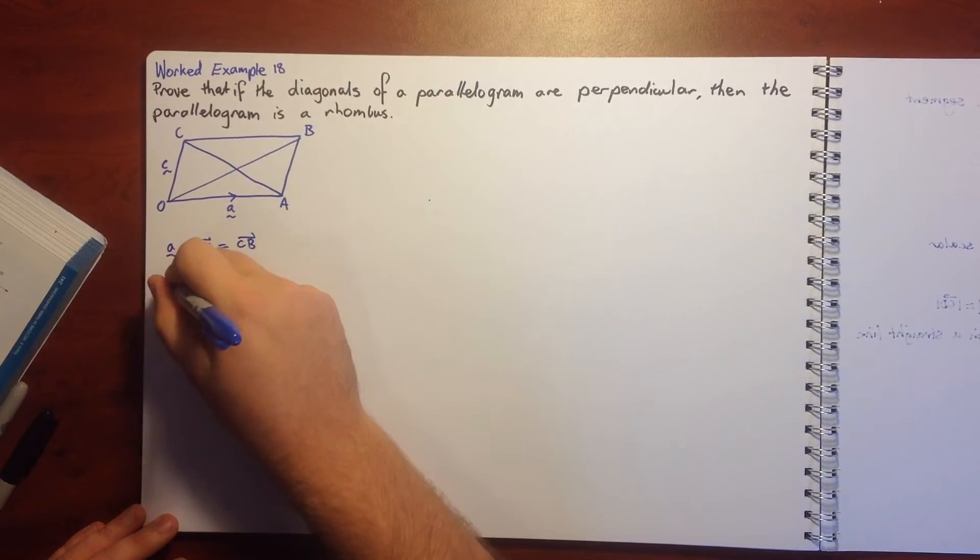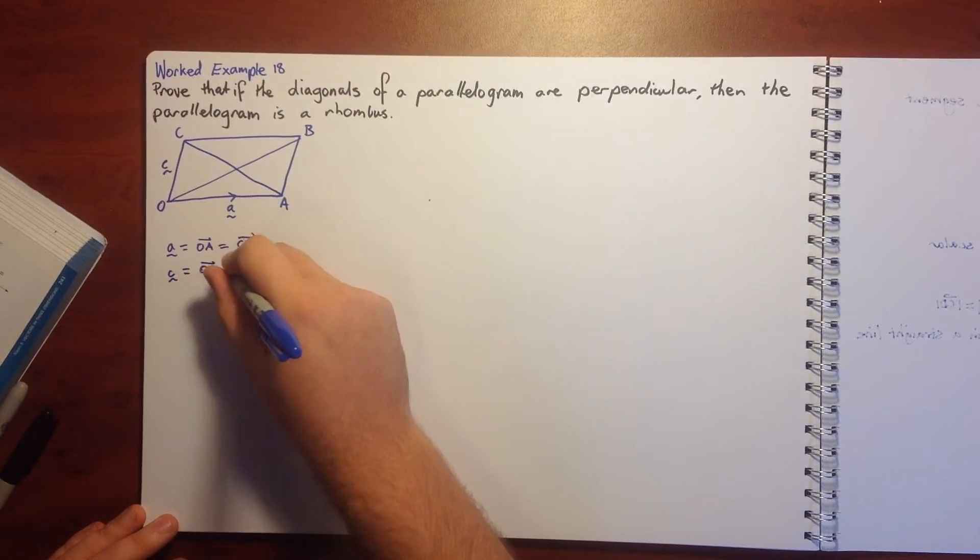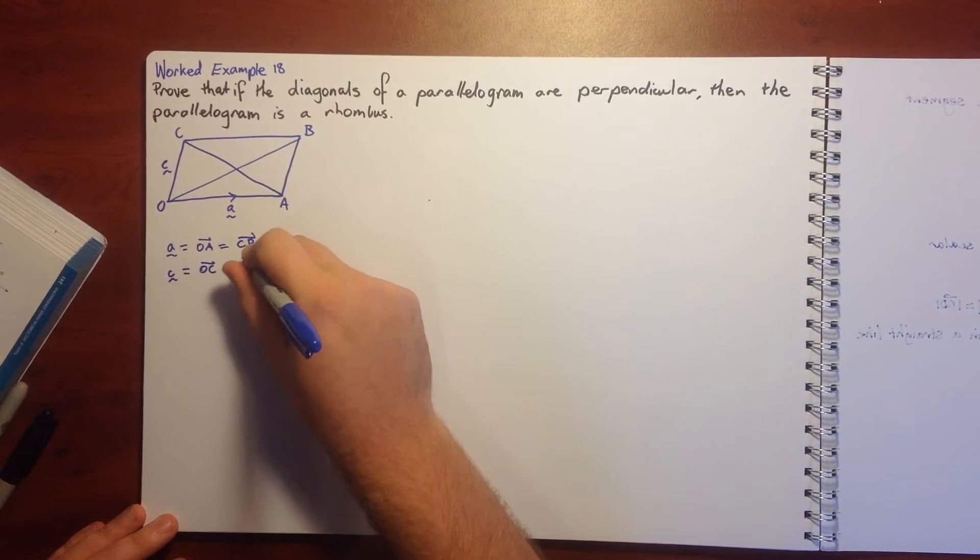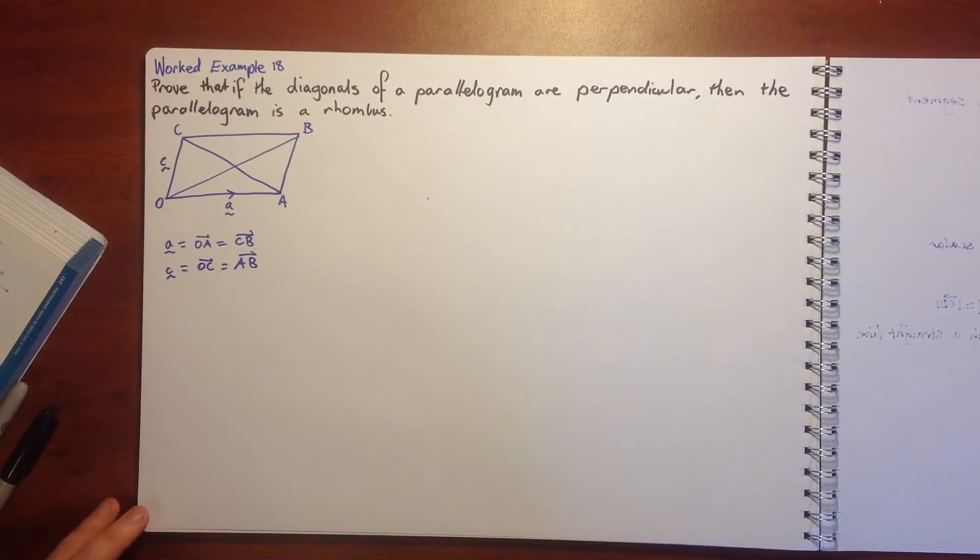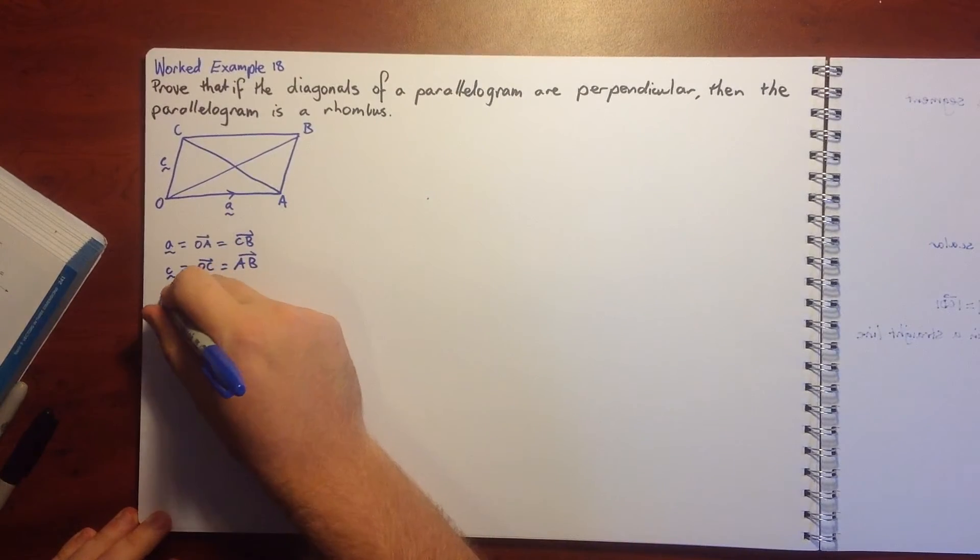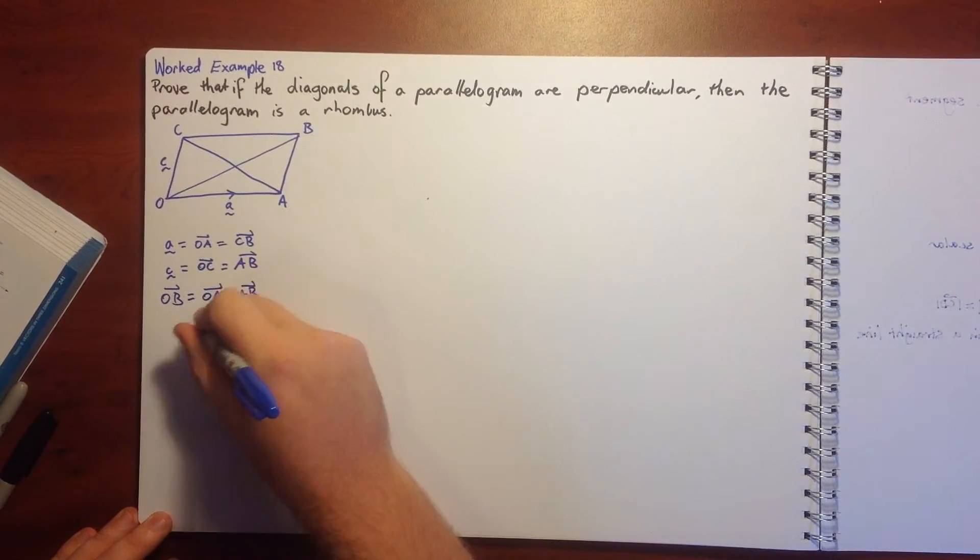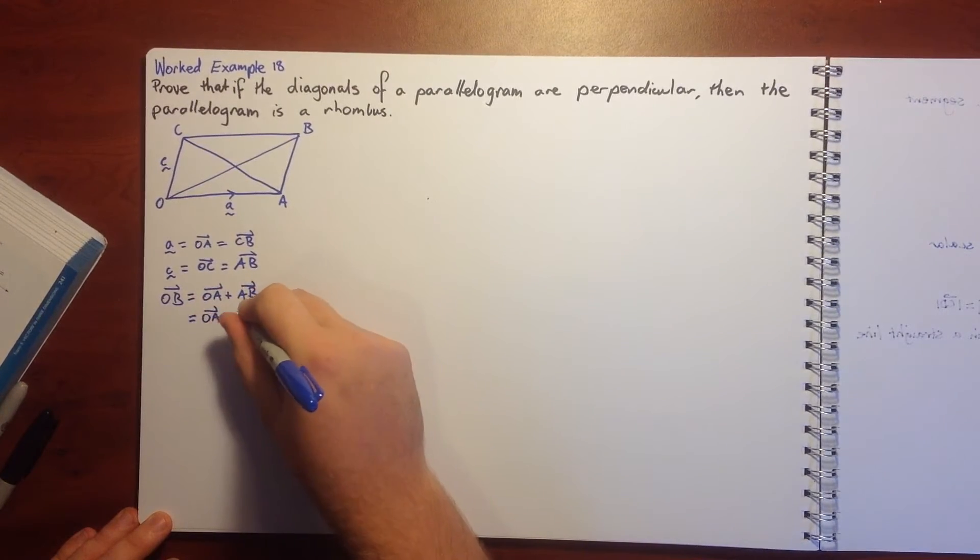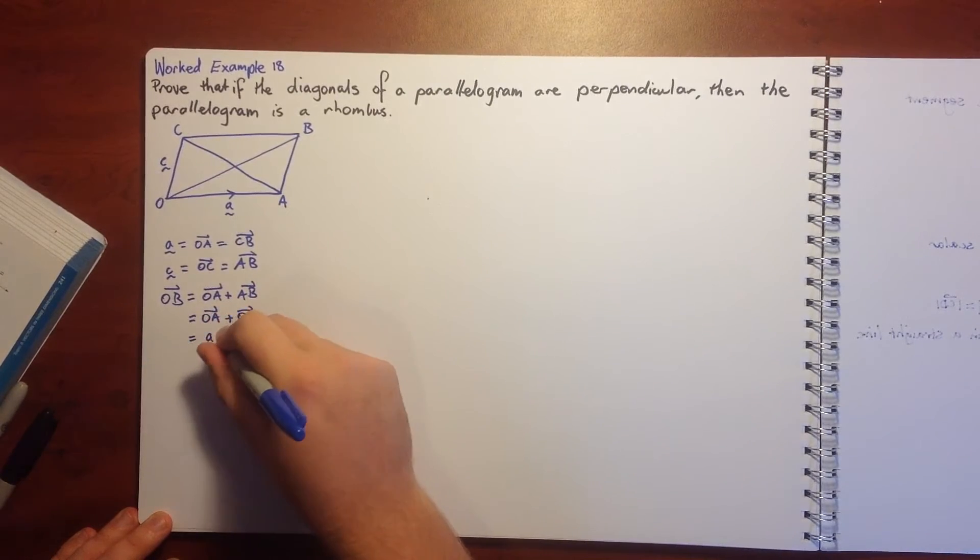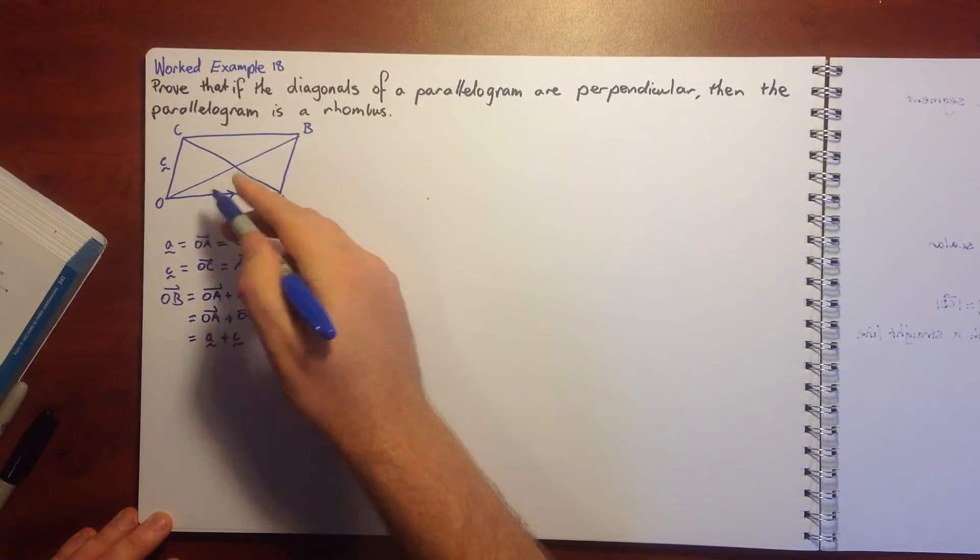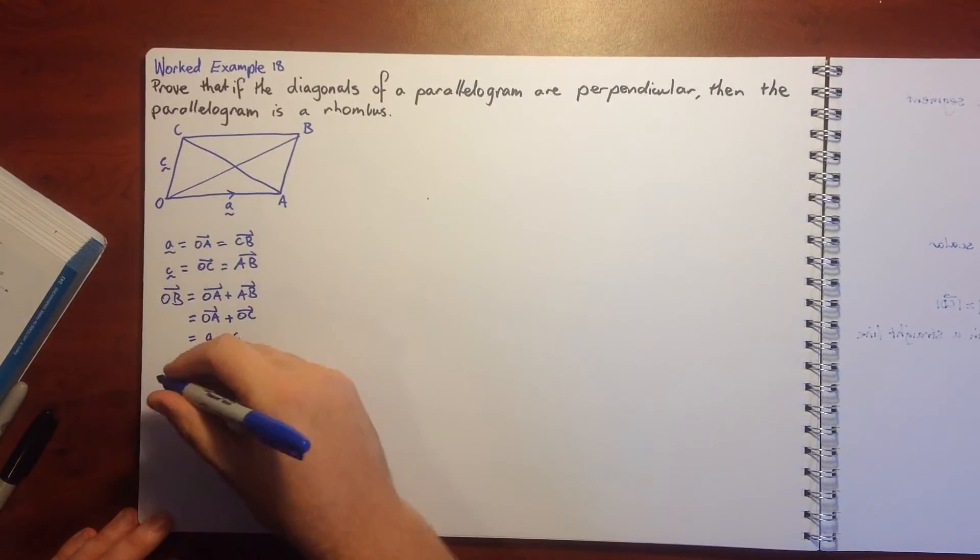And we can say that C equals OC, which is also equal to AB. So we're going to find a vector expression for the diagonal OB in terms of A and C. We can say that OB is equal to OA plus AB, which is the same as OA plus OC, which equals A plus C. That's our diagonal OB equals A plus C.